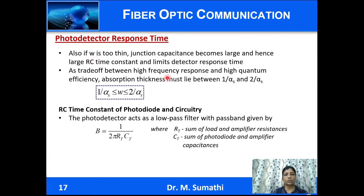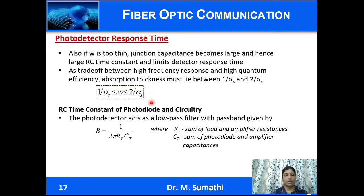If the depletion width is too thin, junction capacitance becomes large, increasing the RC time constant and degrading response time. Therefore, a trade-off between high frequency response and high quantum efficiency is required, and the absorption thickness must be optimally chosen to lie between 1/alpha_s and 2/alpha_s. The RC time constant of the photodiode and circuitry causes the photodetector to act as a low-pass filter with bandwidth given by 1/(2*pi*R_T*C_T), where R_T is the sum of load and amplifier resistances and C_T is the sum of photodiode and amplifier capacitances.